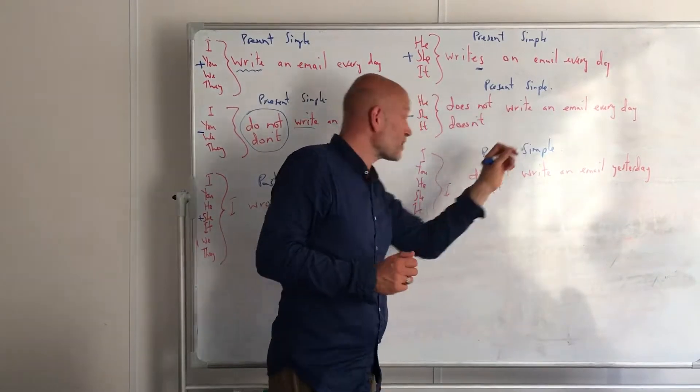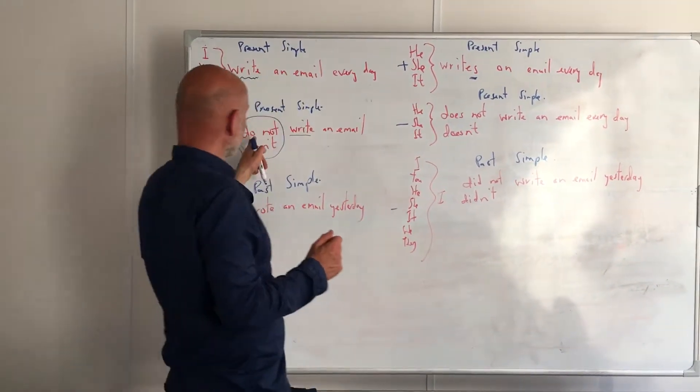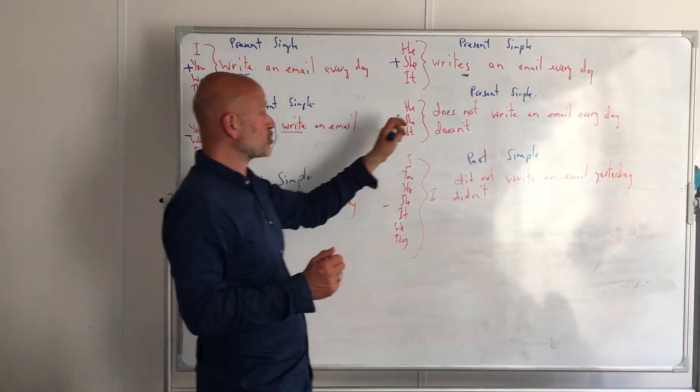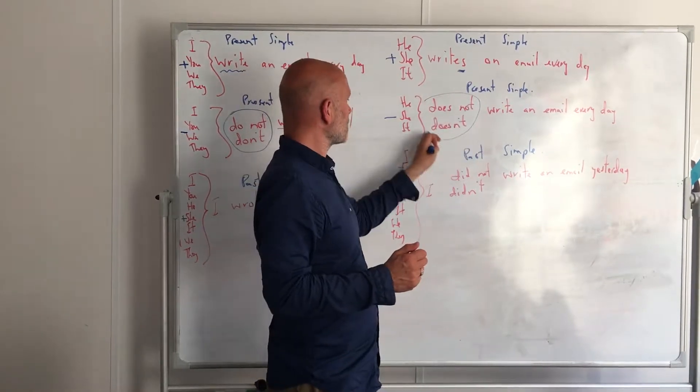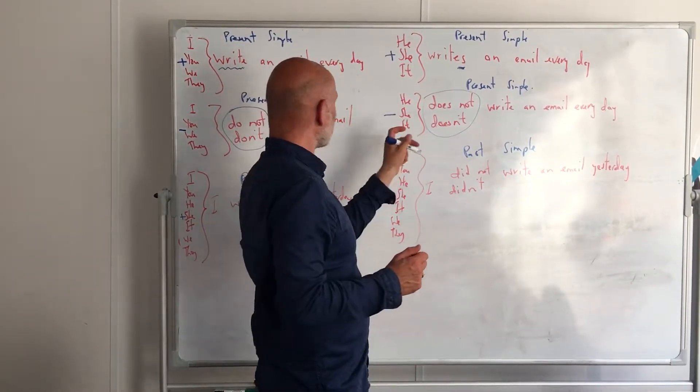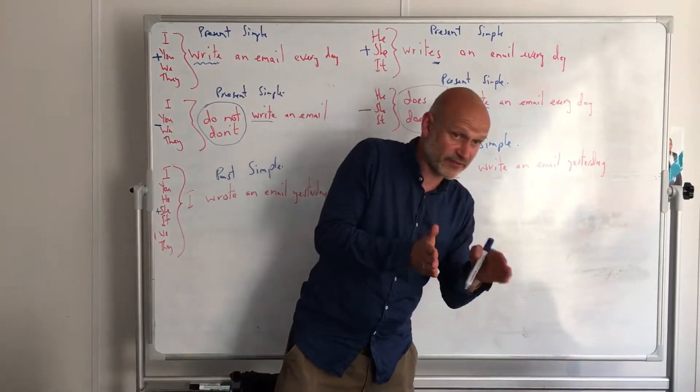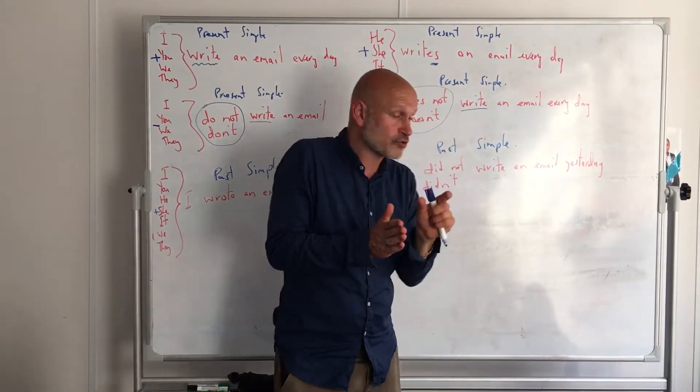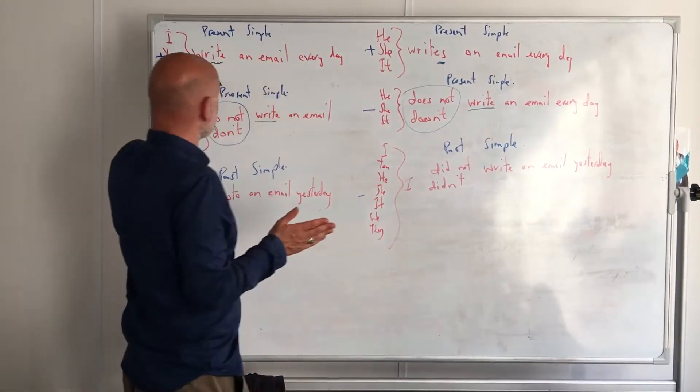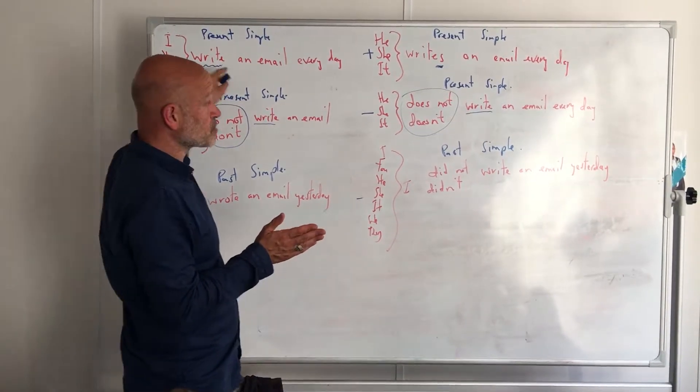Because he, she, it in the positive we put this little S at the end here, but in the negative it's the auxiliary verb 'do' that changes: 'he does not.' And then we need to make sure that the main verb stays in the infinitive form, just like here.